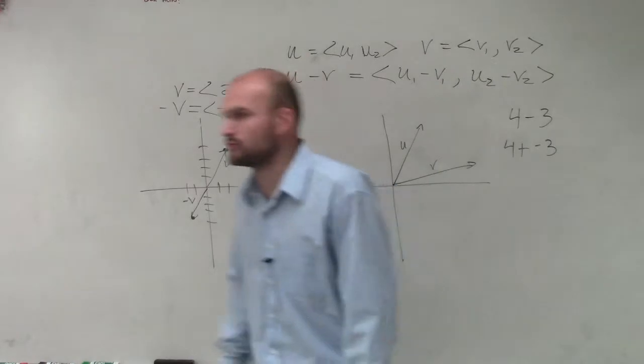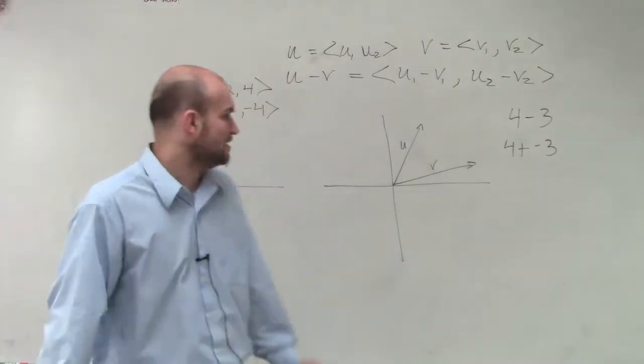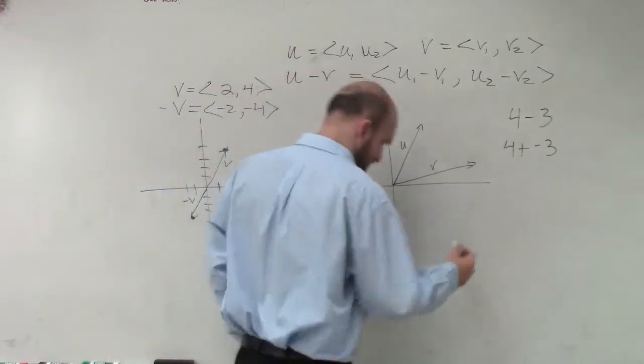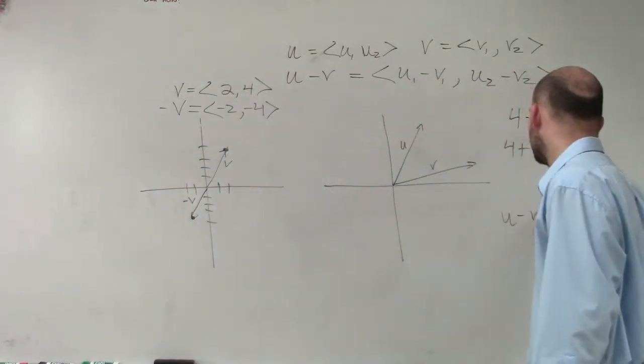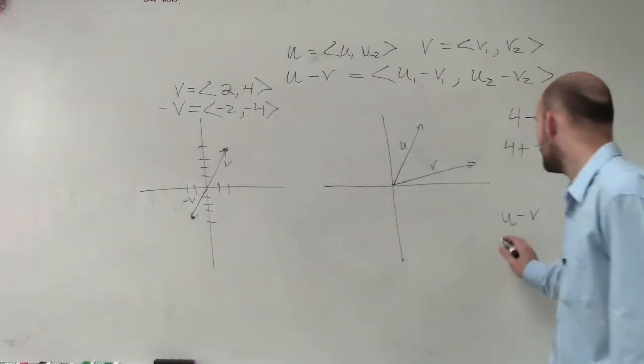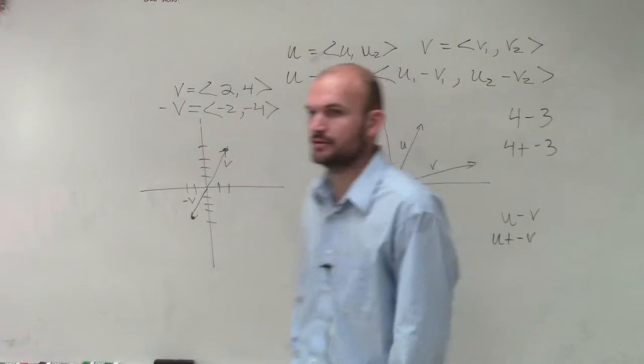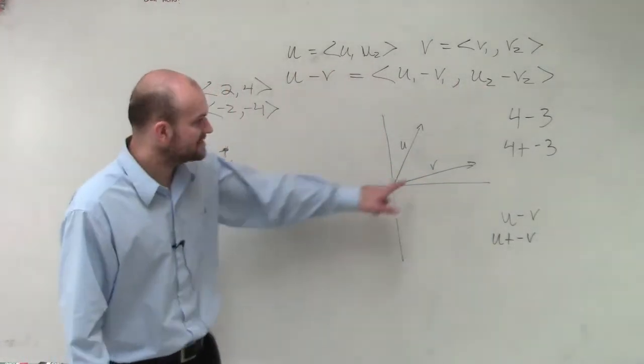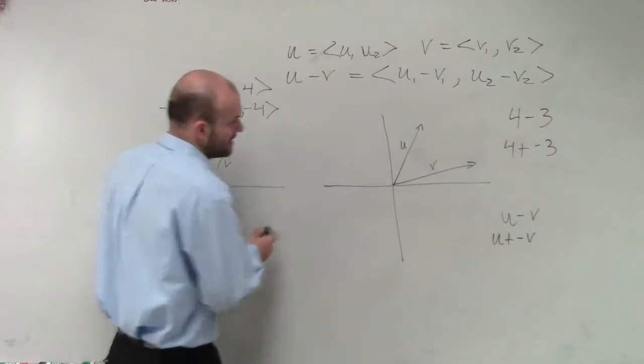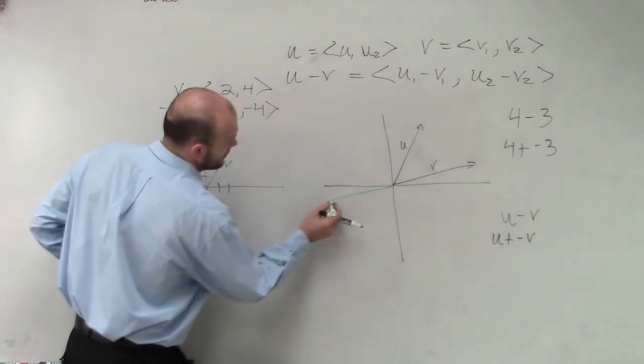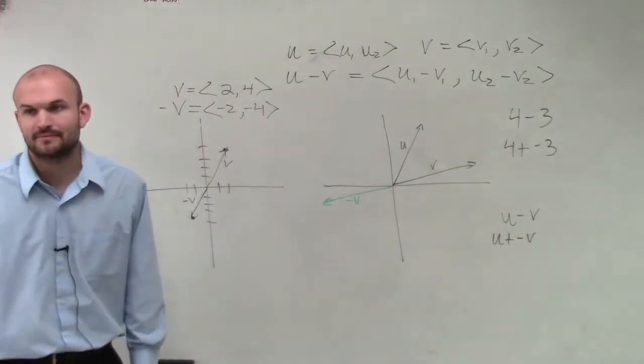Ladies and gentlemen, sometimes it can get a little tricky with the subtraction to kind of understand and contemplate what subtraction looks like. So, rather than writing out u minus v, because if I want to be able to figure this out, I prefer to write out u plus a negative v. Right?